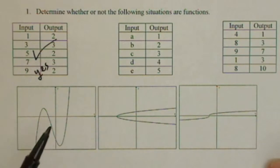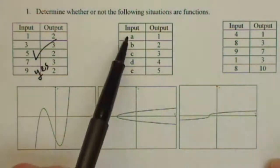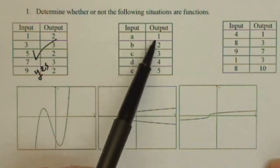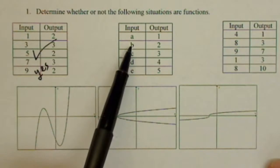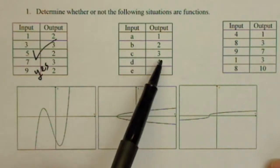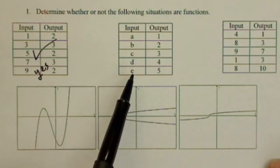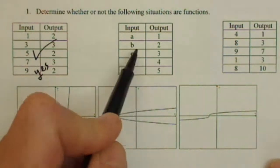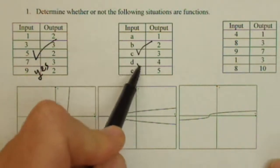It's going to be more obvious when we find a situation that's not. Second one, a is going to one and one only, b is going to two and two only, c goes to three and three only, d goes to four and four only, e goes to five and five only. Each input has a unique output.